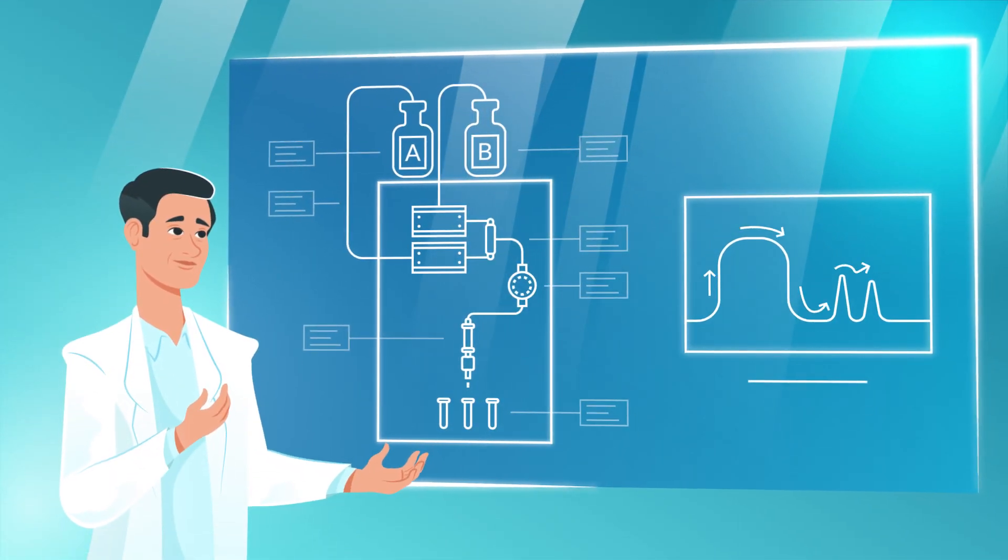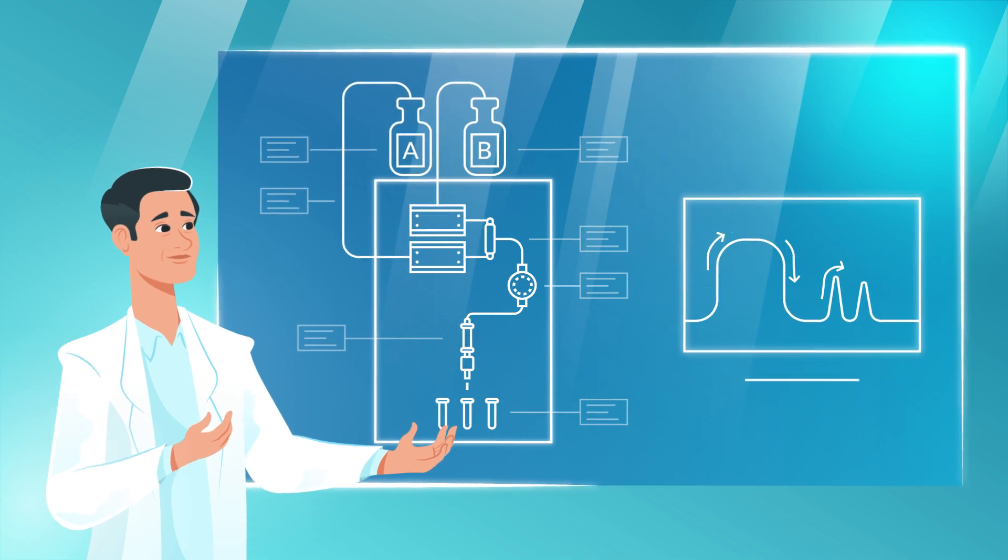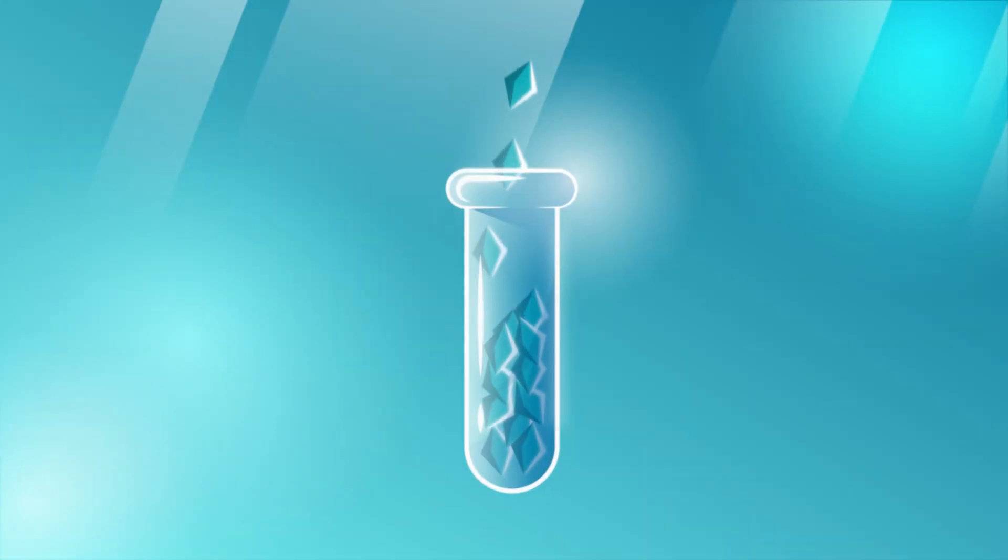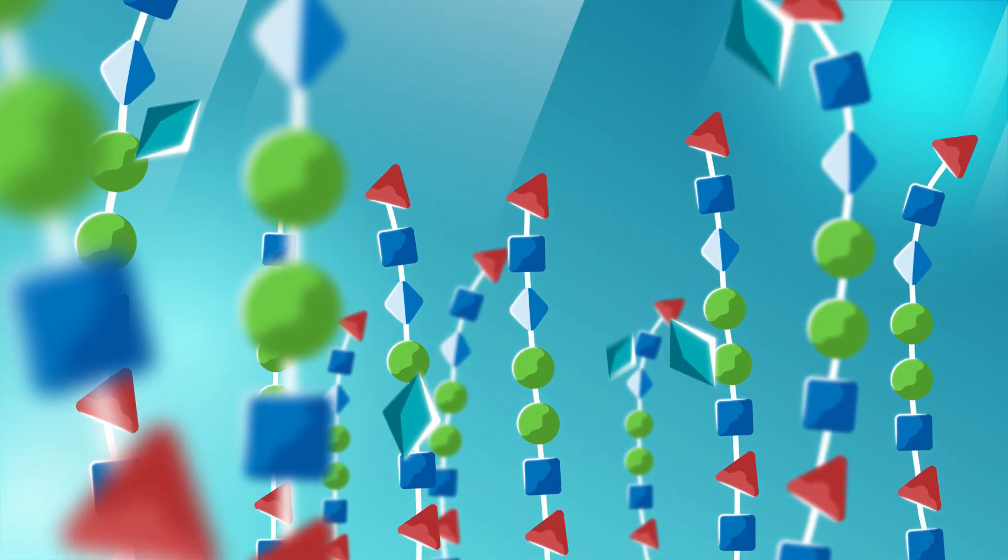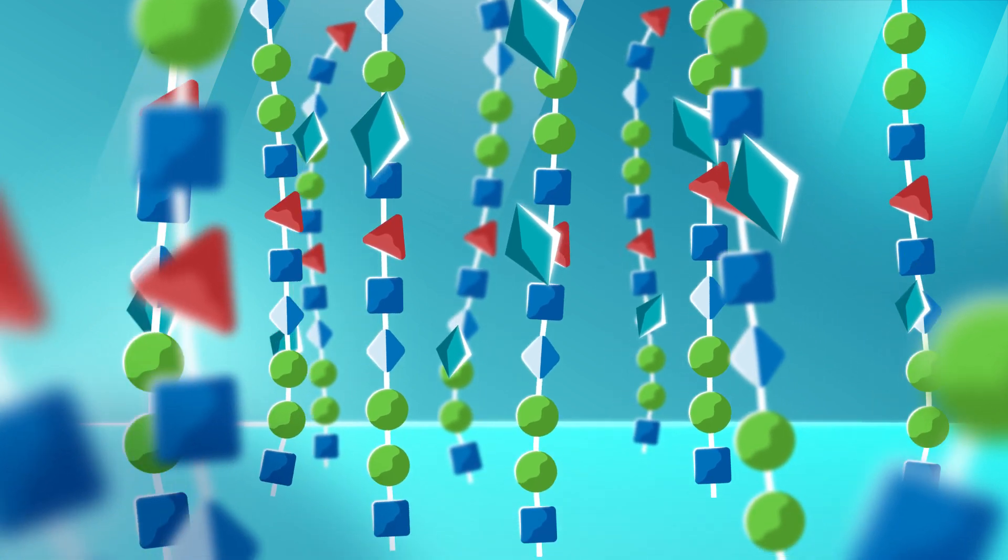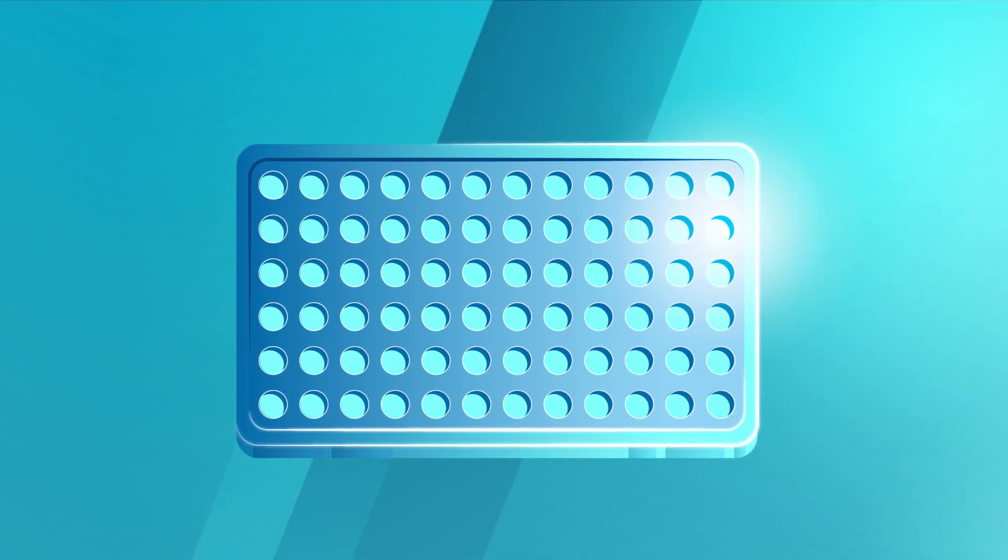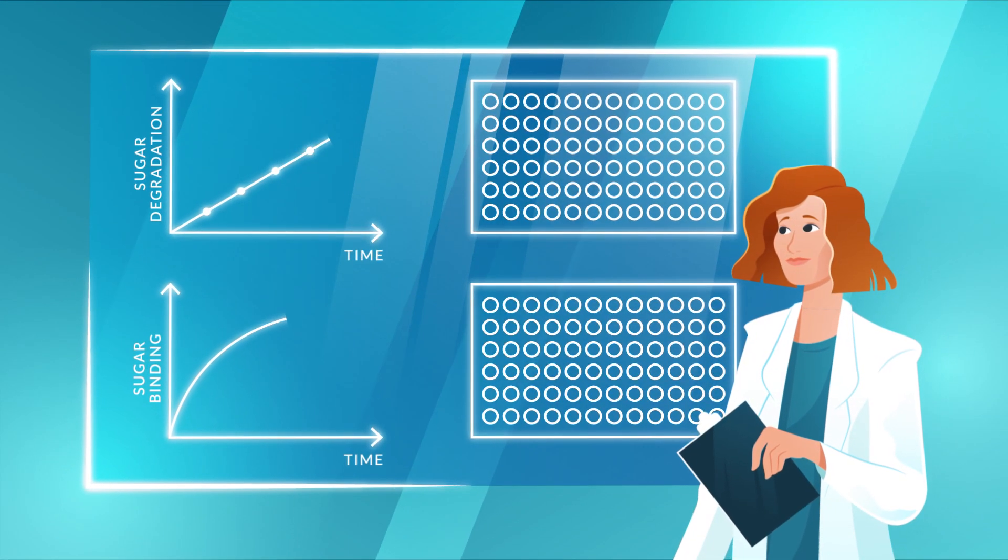The researchers will produce the tail spike proteins independently from the phage. Using dedicated laboratory equipment, they will study the binding of tail spike proteins to the bacterial sugar layer and monitor how efficiently it is degraded.